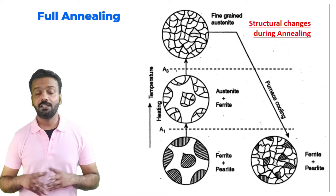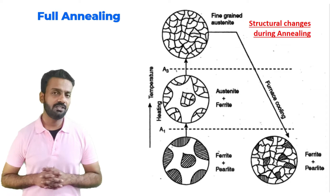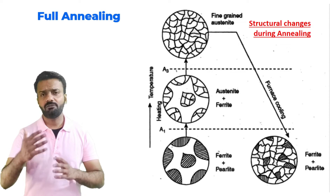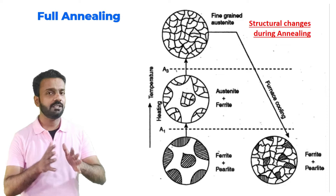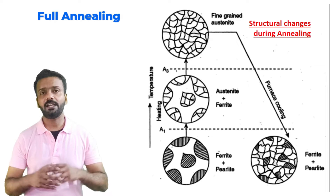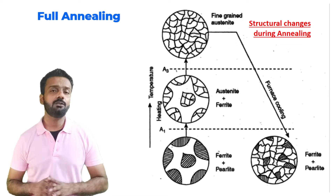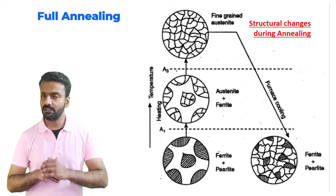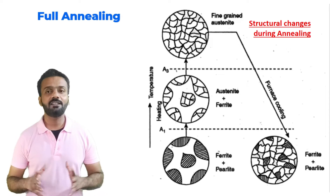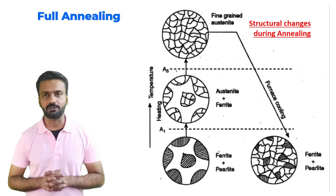Here is the cycle of annealing and the structural changes that happen. Initially at room temperature we have ferrite and pearlite; as we heat above A1 we have austenite and ferrite; then heating above A3 the entire structure becomes fine grain austenite. After furnace cooling, when the material reaches room temperature it is ferrite plus pearlite but the grains are equiaxed, equally distributed, and the material is much softer.